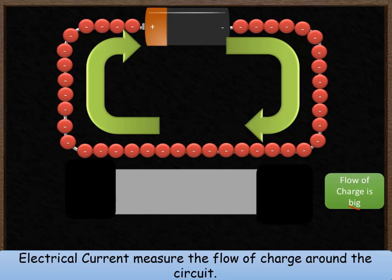The unit for current is amps. So this will have a larger number of amps than the previous circuit.